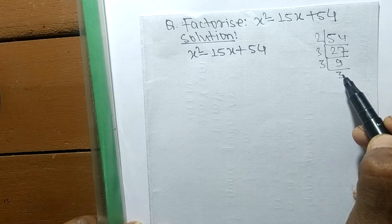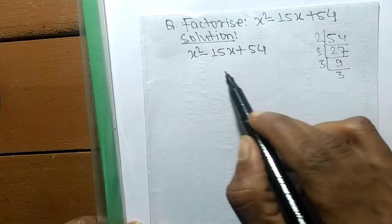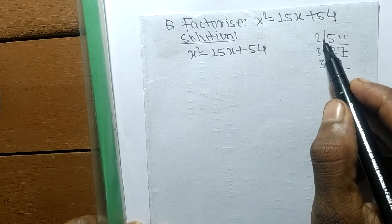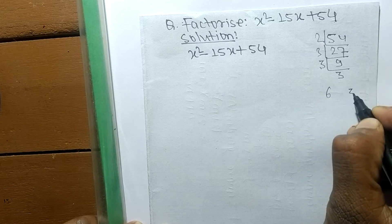So when you multiply the first two numbers, 2 times 3 equals 6, and 3 times 3 equals 9.